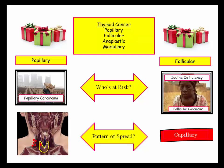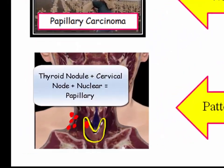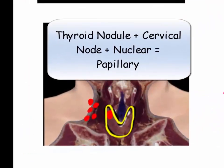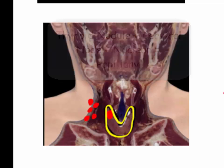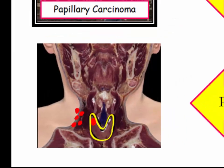Papillary carcinoma spreads regionally. Follicular spreads hematogenously. The classic question will be a patient from Ukraine who lived in Chernobyl 30 years ago during the meltdown. They have a solid, non-functioning nodule, and a lymph node is palpated in the neck. Chernobyl and lymphadenopathy equals papillary carcinoma.